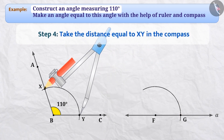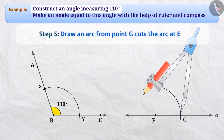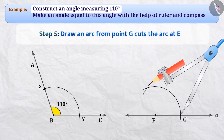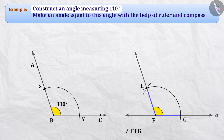Step 5: with this distance, we will place the pointed end of the compass at point G and draw another arc, which will cut the previous arc at point E. Step 6: after this, we will join points F and E and create a ray named FE. Now, we have got angle EFG which is equal to angle ABC.